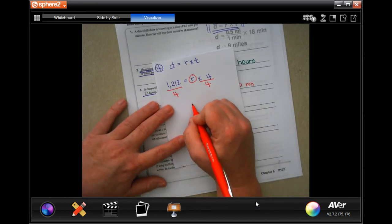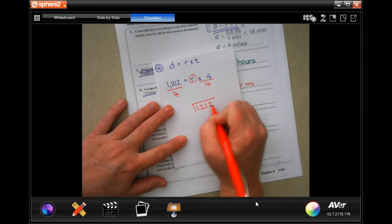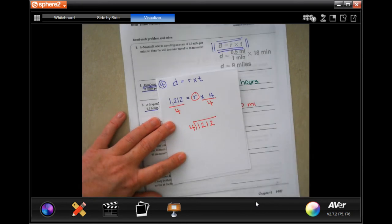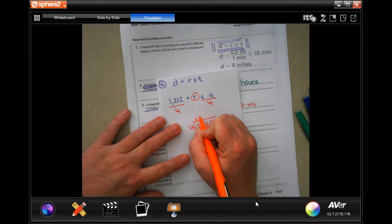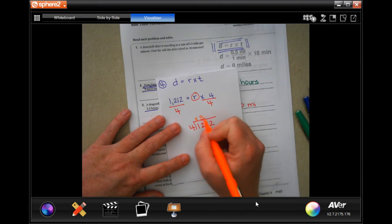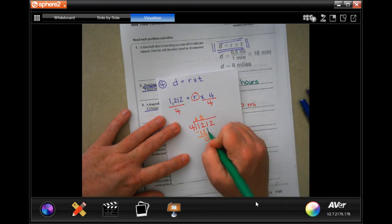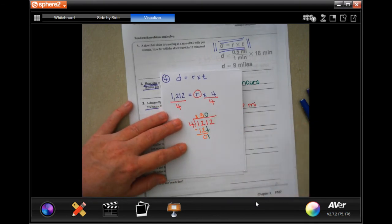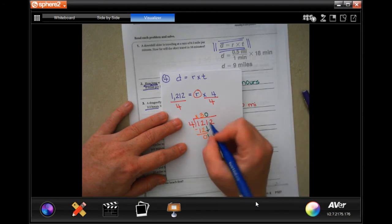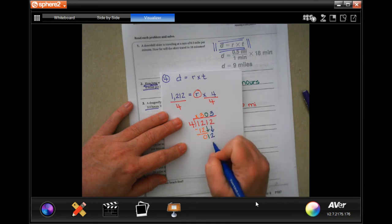So, now, 1, 2, 1, 2, divide by 4. All right. 4 is not going to go into 1, but it'll go into 12 three times. 3 times 4 is 12. Subtract with 0. 0 is definitely smaller than 4, so I'm going to bring down my 1. 4 is not going to go into 1. I have to put a 0. There's no decimal before it or after it, so I need to put a 0. Then, 1 is still smaller than 4, so I can bring down my 2, and 4 goes into 12. 3 times 3 times 4 is 12. Subtract with 0.